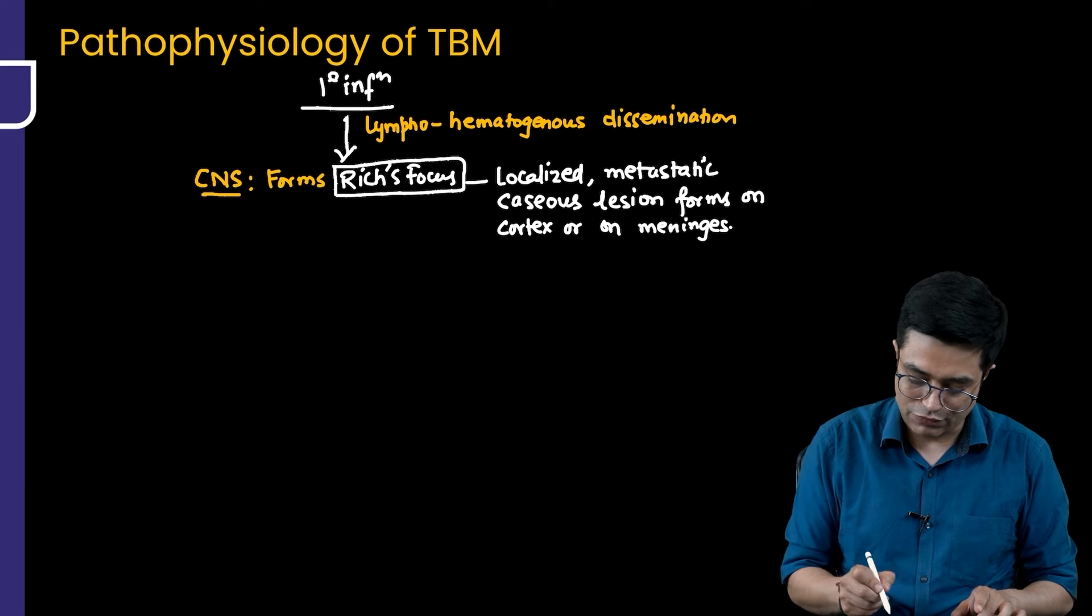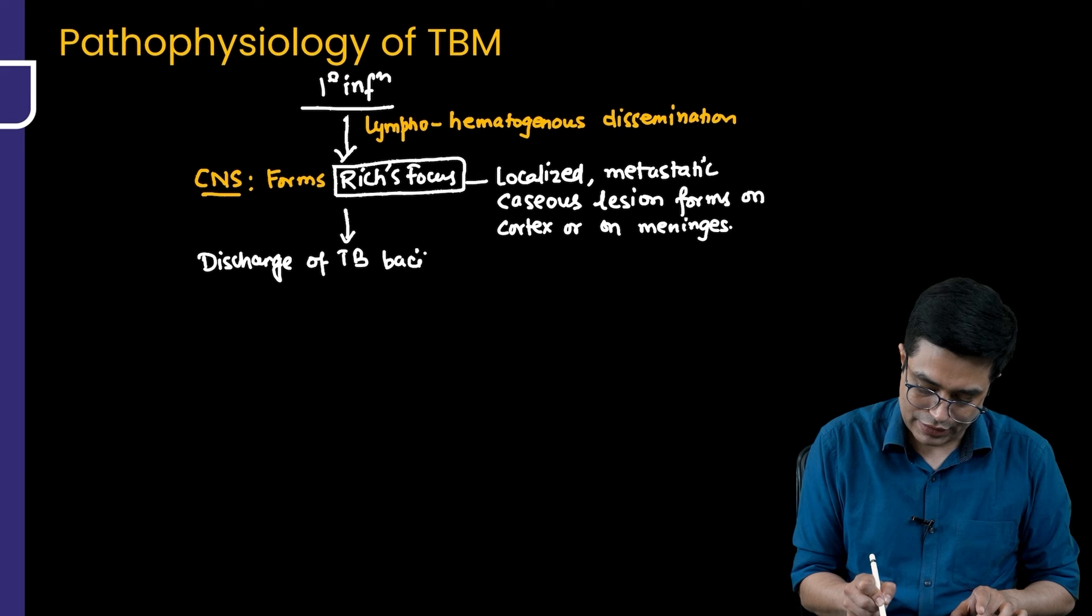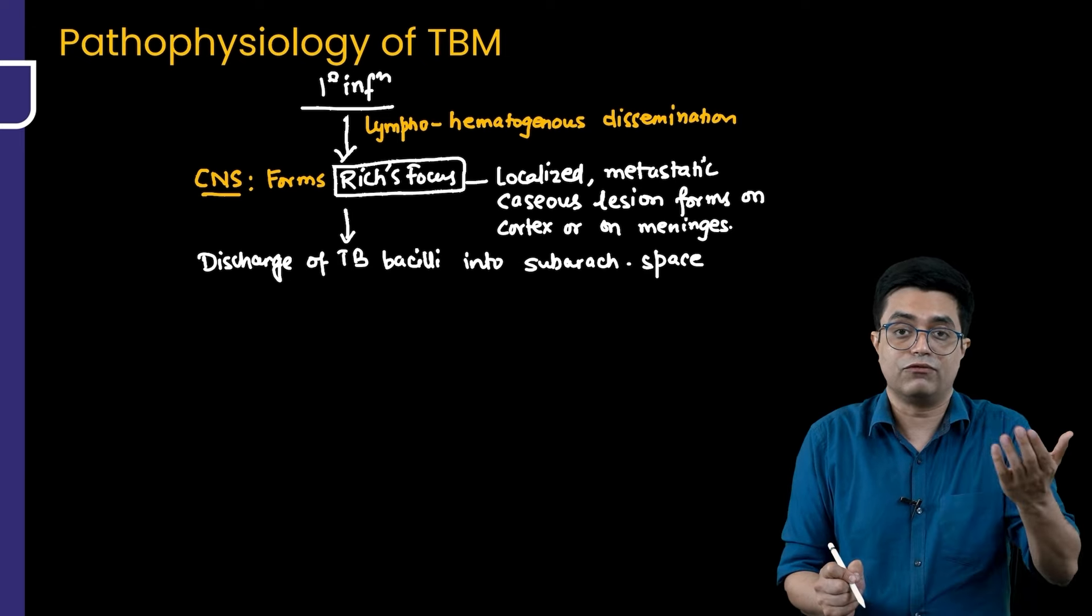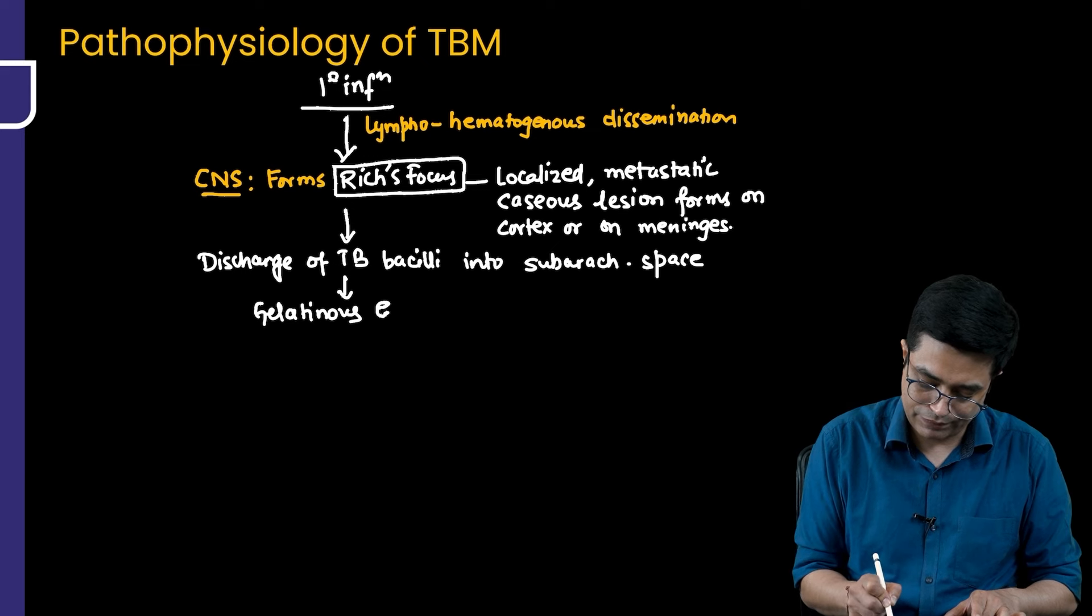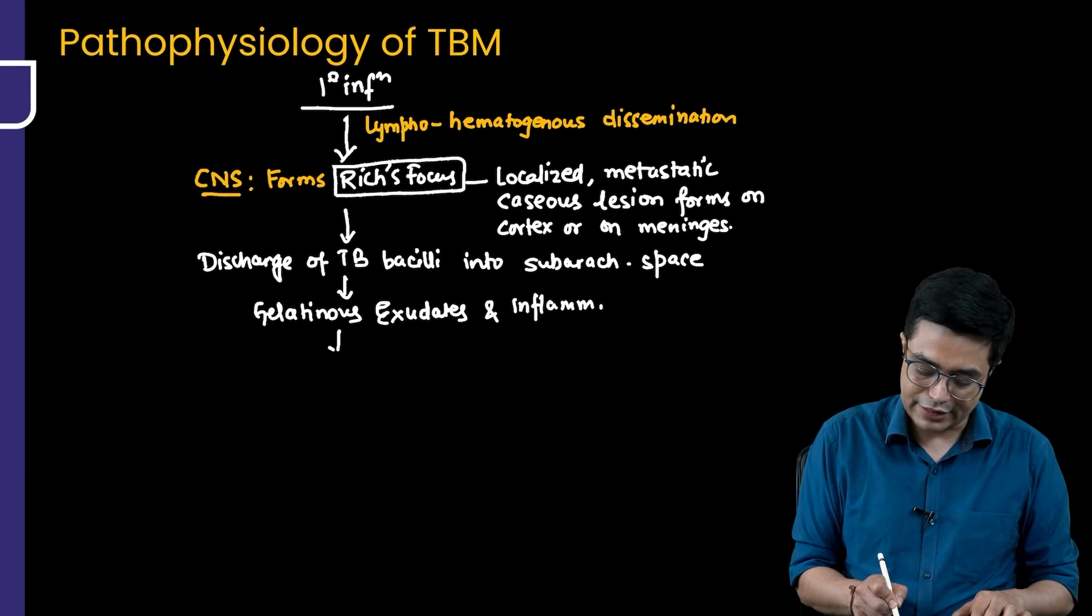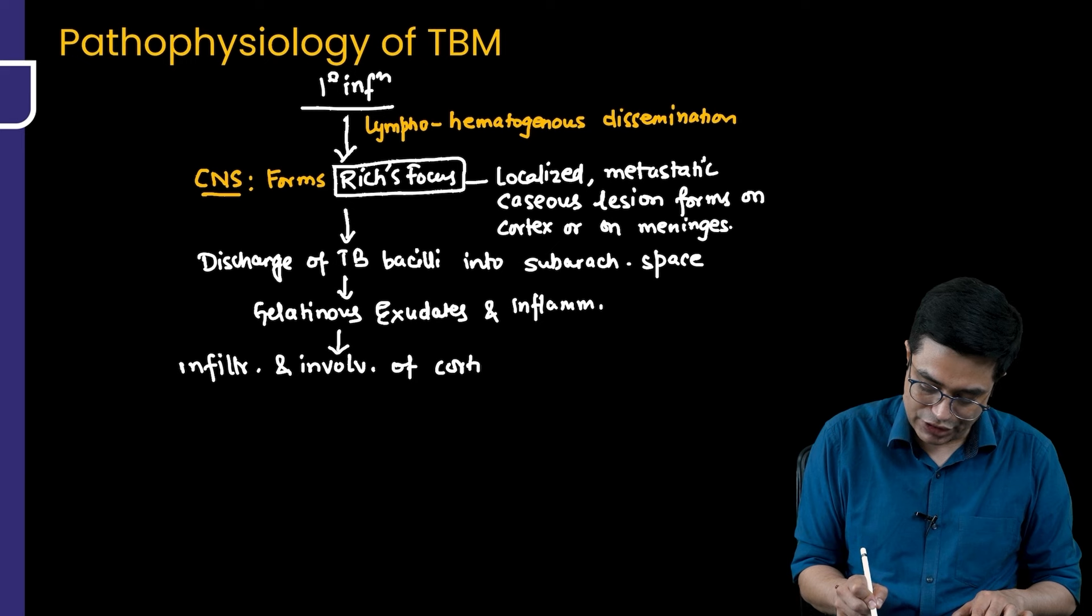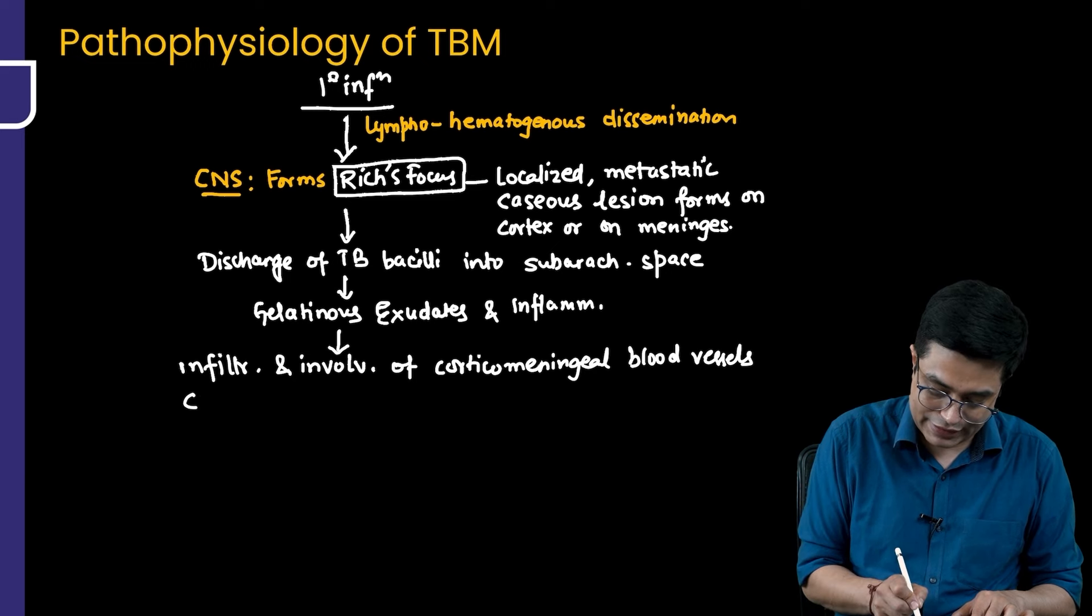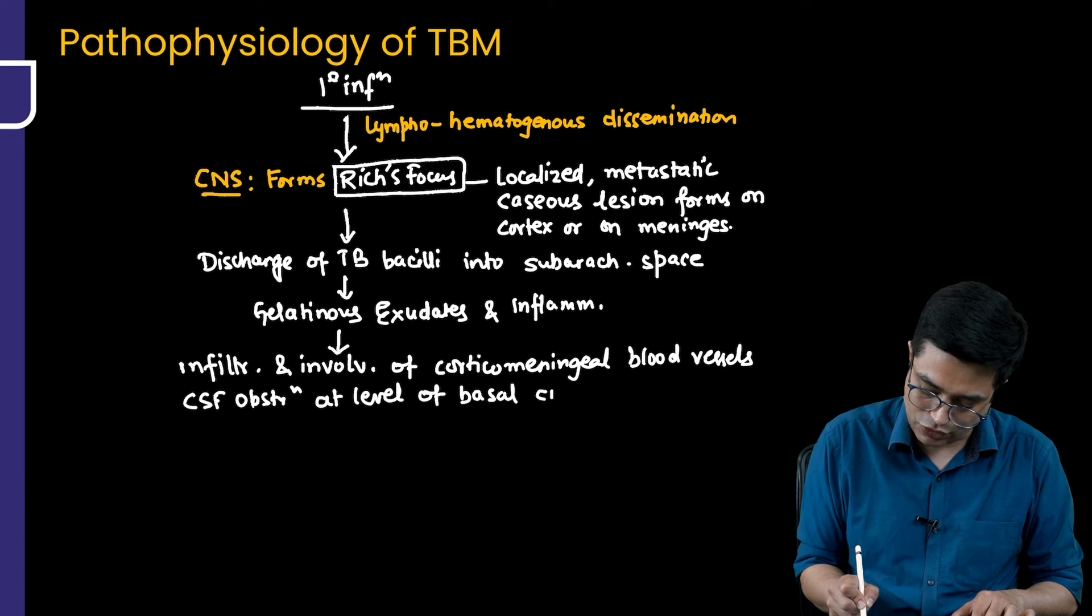Repeatedly what will happen? This Rich's focus will lead to discharge of tubercle bacilli or TB bacilli into the subarachnoid space. Whenever they will enter the subarachnoid space, what is there in subarachnoid space? There is CSF. It will lead to the formation of gelatinous exudates in the patient. And it will also lead to inflammation happening in the subarachnoid space and in the CSF. This gelatinous exudate will cause infiltration and involvement of the corticomeningeal blood vessels. It will cause CSF obstruction at the level of basal cisterns or also called as basilar cisterns.